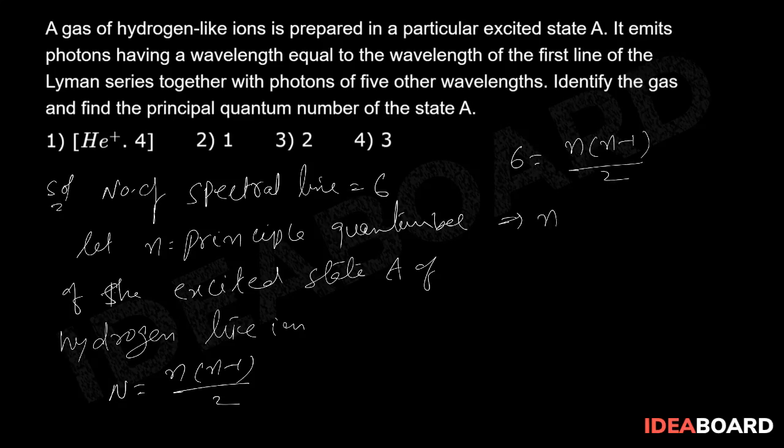From this N into N minus 1 equals 12, or we can write N squared minus N minus 12 equals 0. By simplifying this, we get here N equals 4 or N equals minus 3.